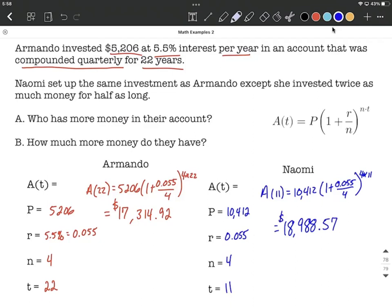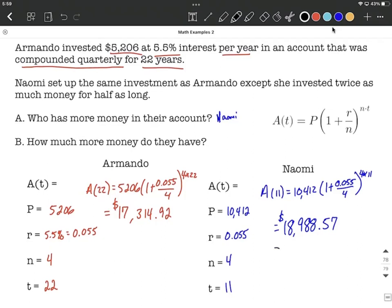To answer these questions, in part A, who has more money in their account at the end? Well, Naomi wins that one. How much more money do they have? We're going to start with $18,988.57 and subtract away $17,314.92. I got this to be $1,673.65.